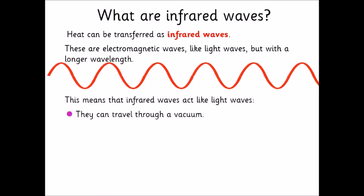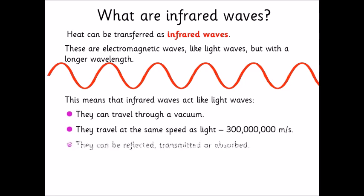What this means is that they can travel through a vacuum, so for example heat can get from the sun to the earth by infrared radiation. They travel at the same speed as light, so all of the different parts of the spectrum travel at 300 million metres per second. And just like all the other waves, they can be reflected, transmitted, or absorbed, and that will become very important over these two lessons.